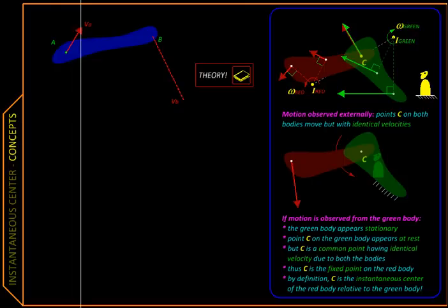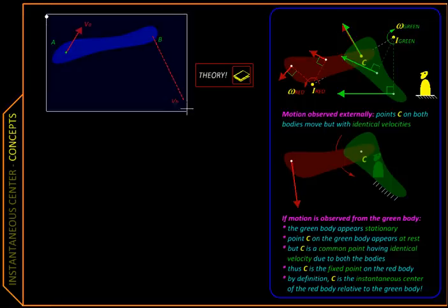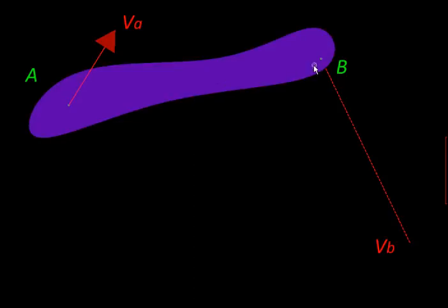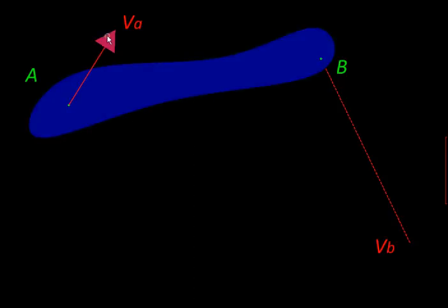Now let us see how to find this instantaneous center. For that we are going to look at this rigid body given to us. Here we have been given two points in the rigid body, and we know the velocity of point A completely and we know the direction in which B is moving. We don't even know the sense whether it is moving downward or upward, but this information is sufficient for finding the instantaneous center.